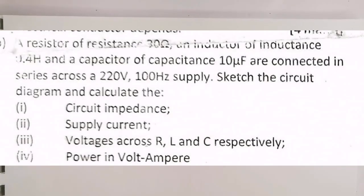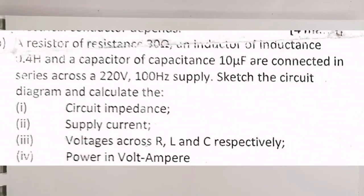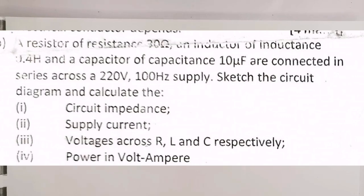Welcome to this video. We are going to be explaining the series connection of resistor, capacitor, and inductor in an alternating circuit using this question. The question says: a resistor of resistance 30 ohms, an inductor of inductance 14 Henry, and a capacitor of capacitance 10 microfarad are connected in series across a 220 volts, 100 Hz supply. Sketch the circuit diagram and calculate the circuit impedance, the supply current, voltage across the resistor, inductor, and capacitor, and power in volt-ampere.